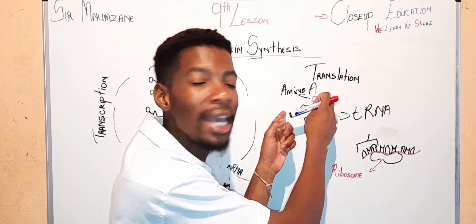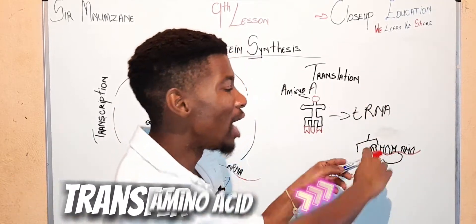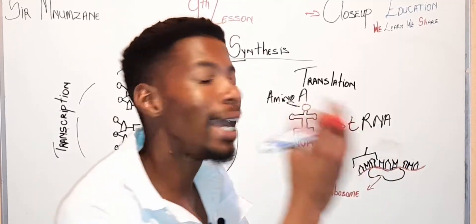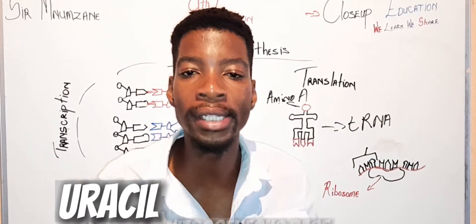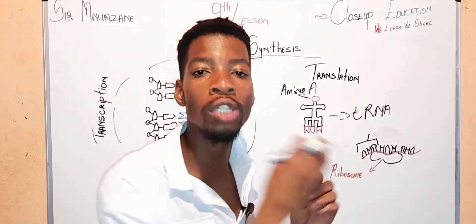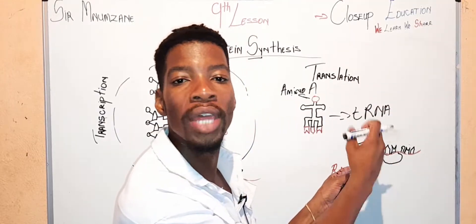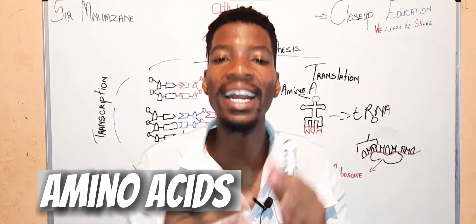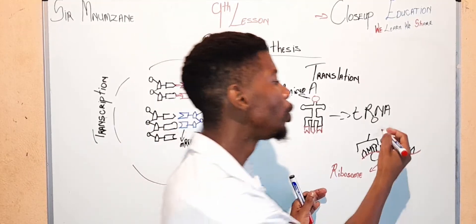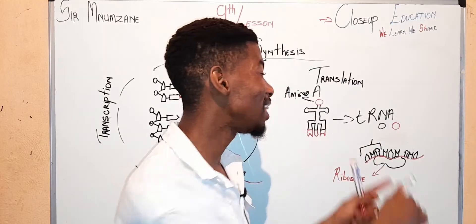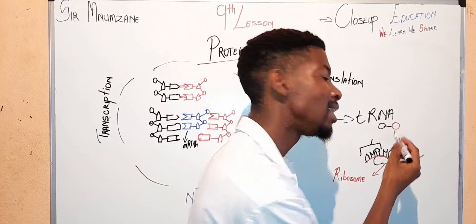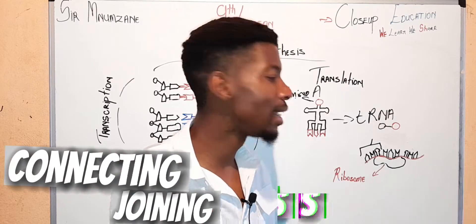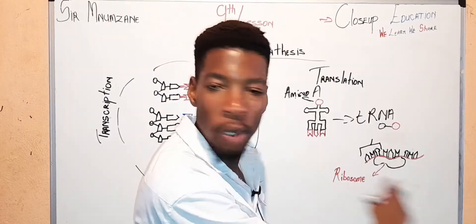An mRNA consists of codons while the tRNA consists of anti-codons. So once the tRNA with complementary anti-codons has found the amino acid, it will move towards the ribosome and attach itself to their complementary bases. Remember, both tRNA and mRNA consist of uracil and never thymine. Once the anti-codons on the tRNA attach to their complementary codons, they will leave the amino acid on top. Then a second tRNA will be attracted, leaving another amino acid. After the second amino acid is left, a peptide bond is created, connecting the amino acids as the process continues.